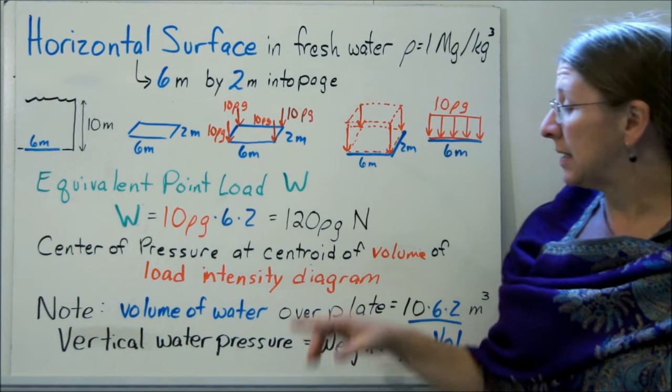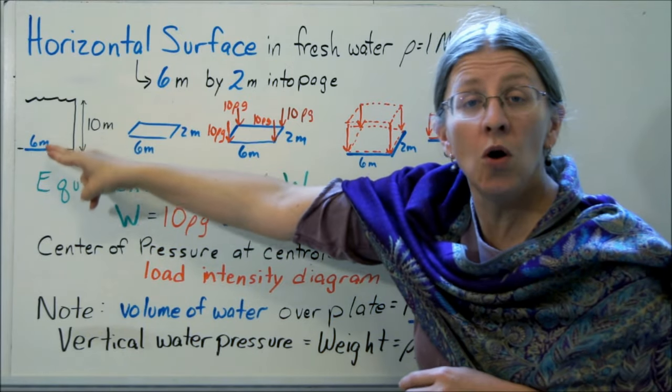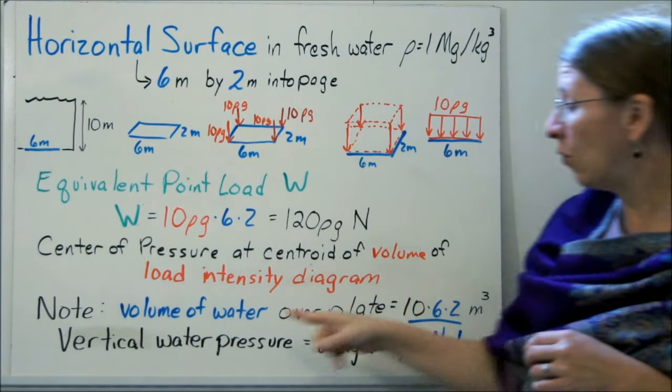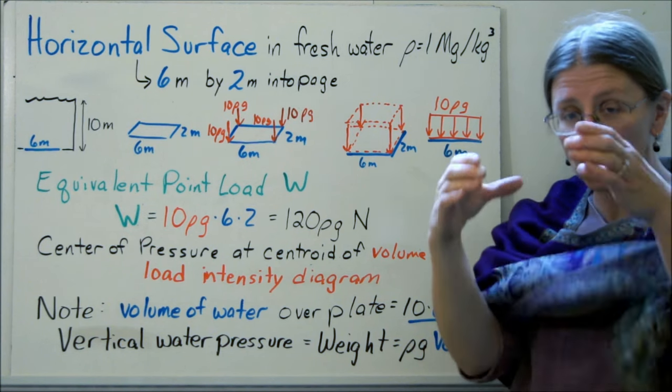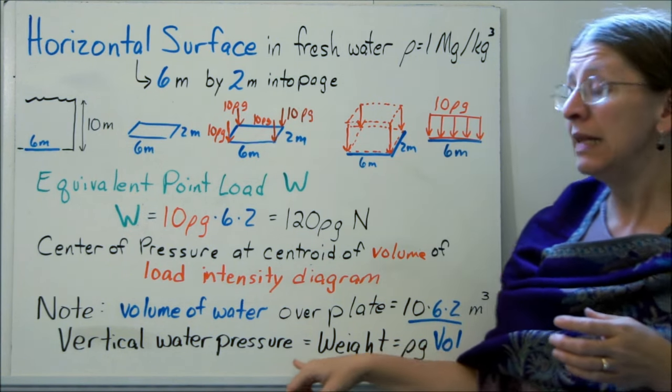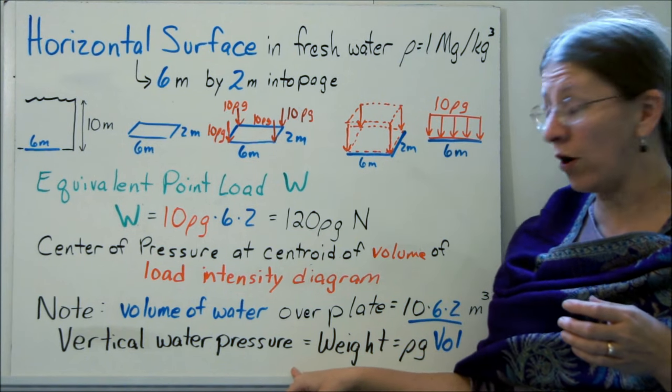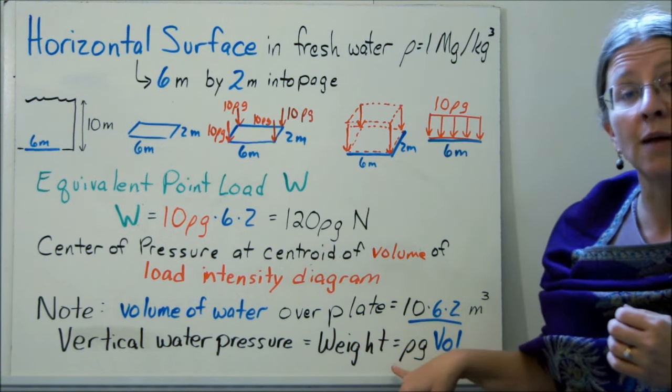One of the things you want to bear in mind is that if you look at a column over this plate, the volume of water would be 10 times 6 times 2. That would be how much water was in a column pressing on that plate on the bottom. This is why we sometimes say that the vertical water pressure is essentially the weight of the water. That would be ρg times the volume.